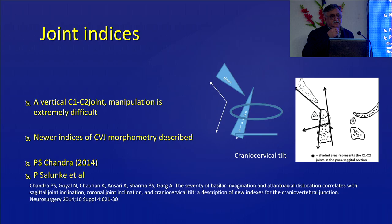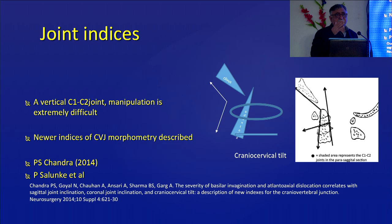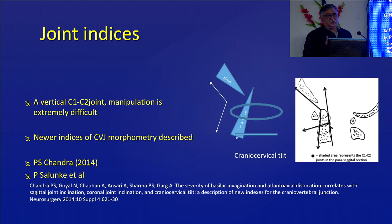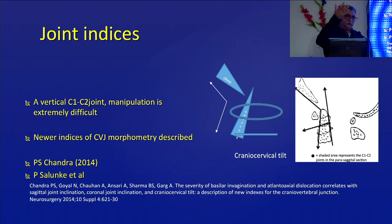Before that, he also described new joint indices. The McGregor and McRae lines were the earliest, but new indices help decide which procedure to adopt. The key concept is the verticality of the C1-C2 joints: as long as they are parallel or near-parallel to the floor, joint manipulation works. But if the joints are vertical, it is very difficult to maintain fixation as gravity keeps acting on it. In cases of vertical joints, you may still proceed with occipitocervical fusion and anterior surgery.